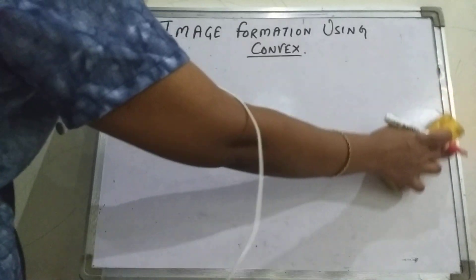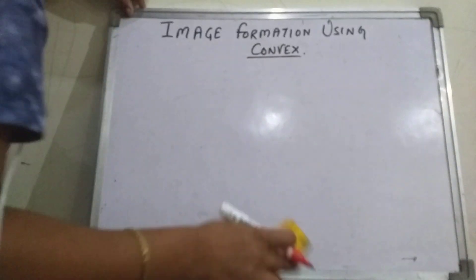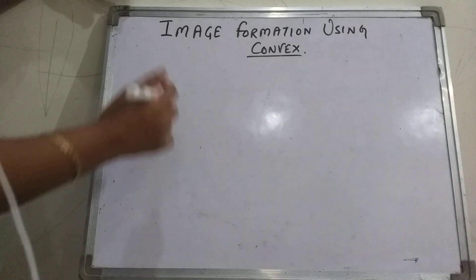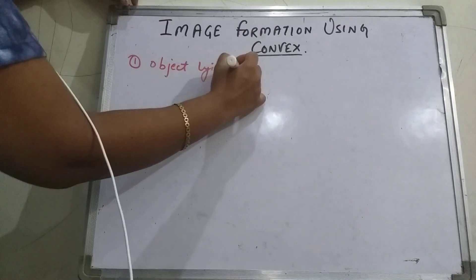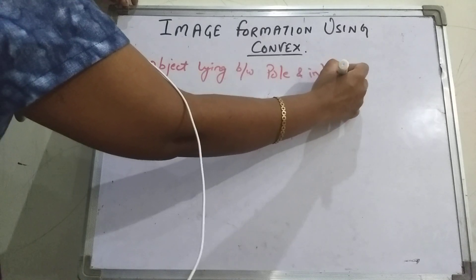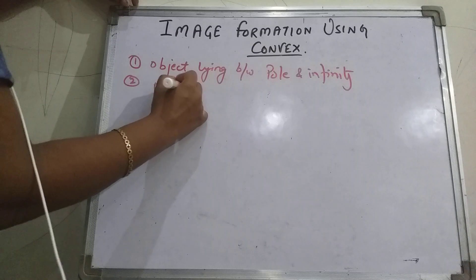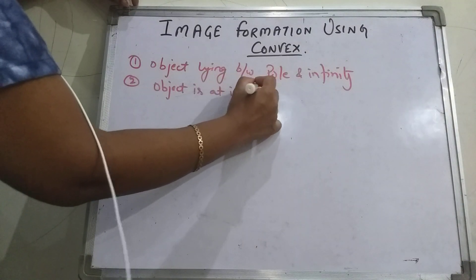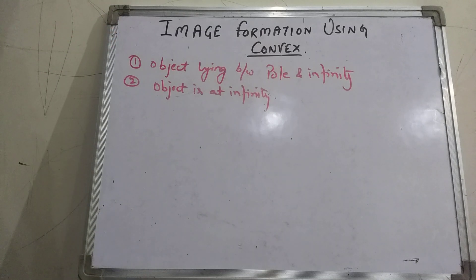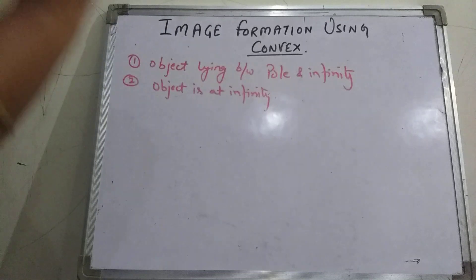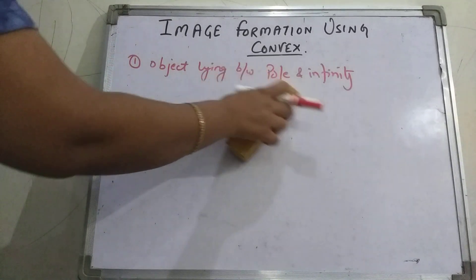From these rules and the way of presentation, you can conclude that in case of convex, the image formed will always be imaginary. We are going to consider two positions of the object: one is the object lying between pole and infinity, and the second is the object at infinity. In case of convex, wherever you place your object, the image is always imaginary. The only difference is in the position and size of the image.